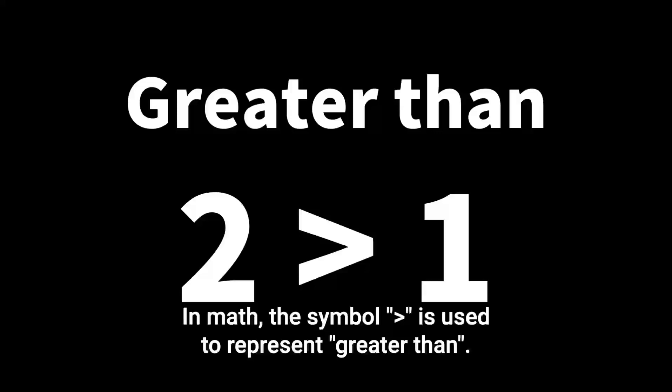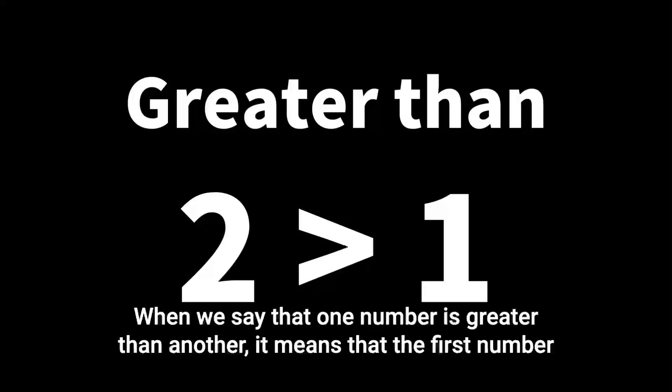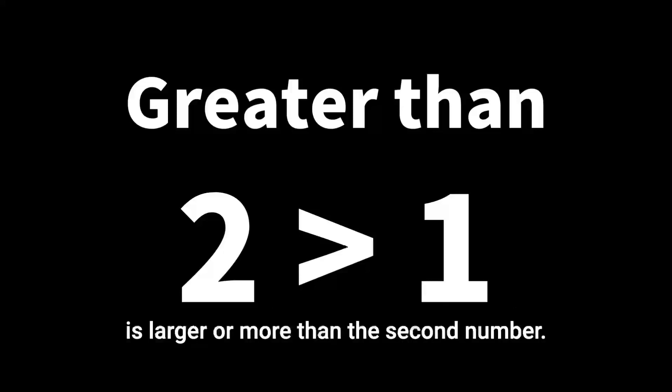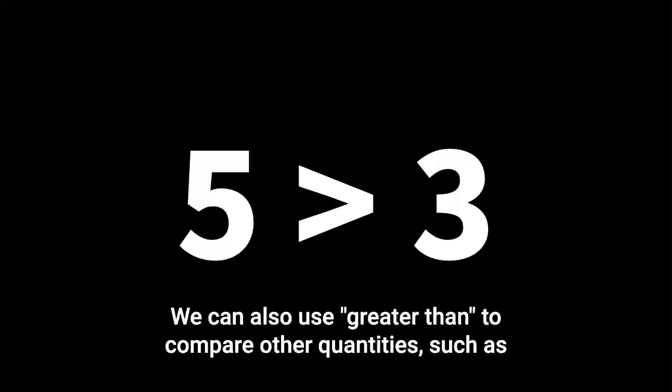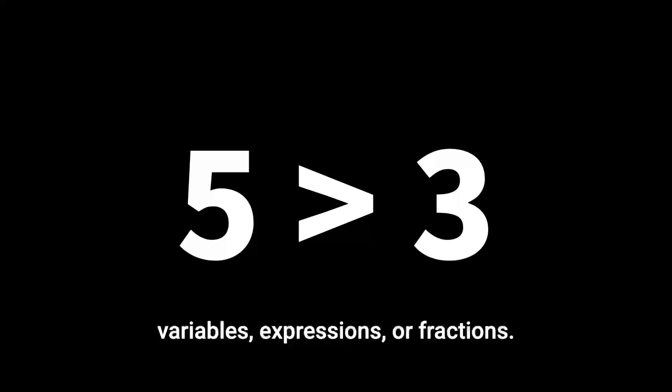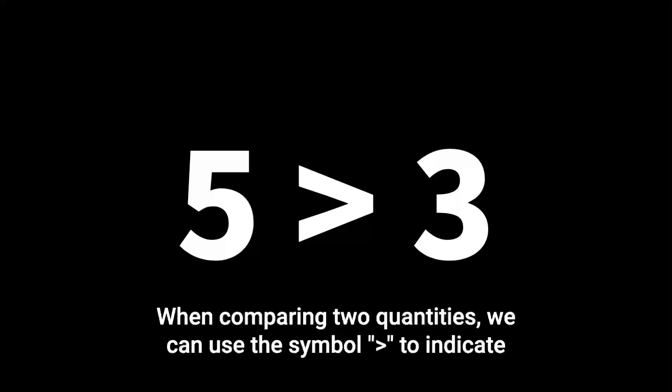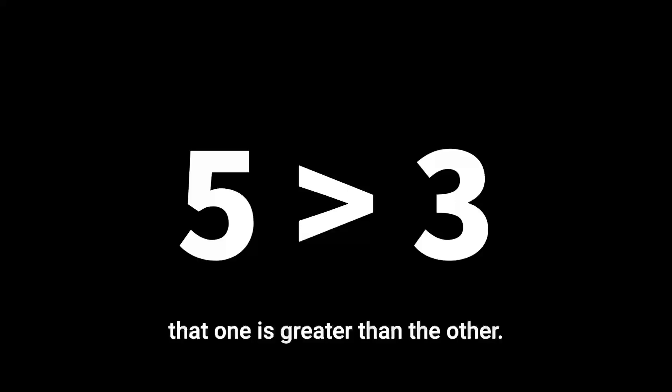In math, the symbol greater than is used to represent greater than. When we say that one number is greater than another, it means that the first number is larger or more than the second number. For example, if we say that five is greater than three, we mean that the number five is larger than the number three. We can also use greater than to compare other quantities, such as variables, expressions, or fractions. When comparing two quantities, we can use the greater-than symbol to indicate that one is greater than the other.